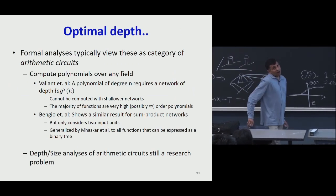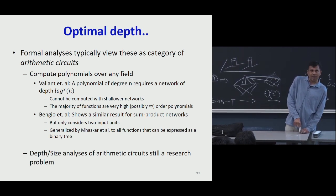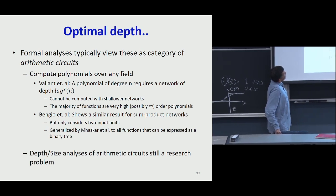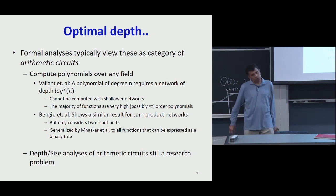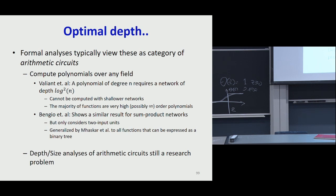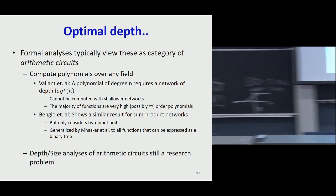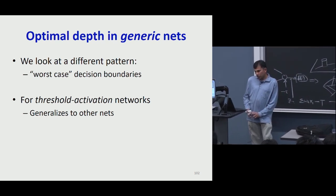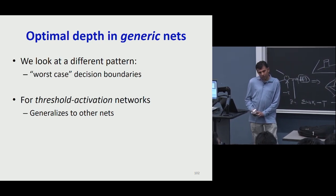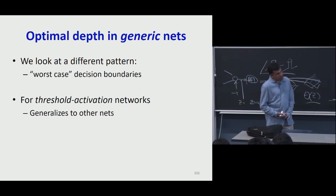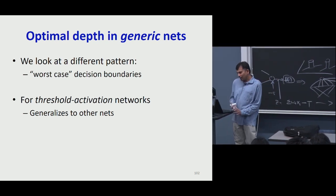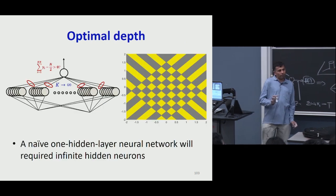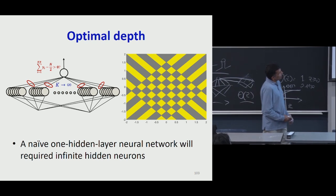Formal analyses view neural networks as arithmetic circuits computing polynomials over a field. Leslie Valiant's result says a polynomial of degree n requires a network of at least log²(n) layers. If you reduce the depth by even one layer, the network becomes exponentially large. We've looked at these for threshold networks, but it generalizes to other networks. Let's now look at more complex patterns to get an idea of how deep networks must be.